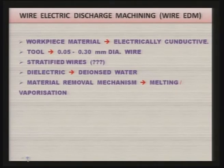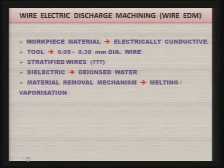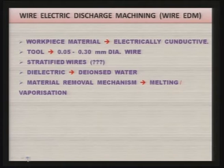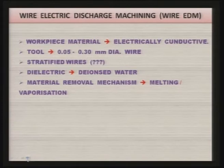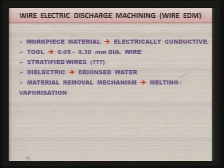The material removal mechanism in wire EDM remains the same as in electric discharge machining — that is, melting of material by heat produced by the spark between the tool and workpiece. Many times the temperature of the localized area where sparking is taking place is so high that it is not only melting; part of the material gets vaporized from both the wire and the workpiece. So the mechanism is the same as in EDM.